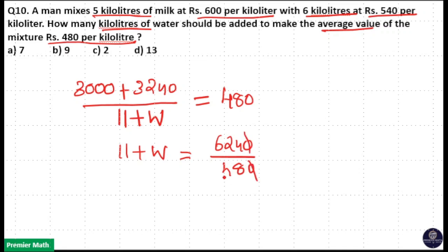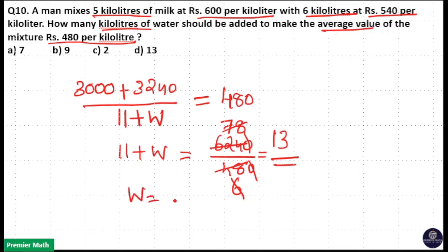Cancelling the zeros: 624 divided by 48. Working through: 8 into 6 = 48, 8 into 7 = 56, 8 into 8 = 64. So 78 by 6 means 6 ones is 6, 6 threes = 18 — giving 13. Therefore 11 plus water = 13, and the water amount is equal to 2 kilolitres.